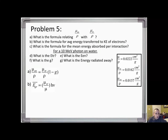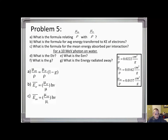The average energy transferred to kinetic energy of electrons equals mu_TR over mu times the initial photon energy. Note that mu_TR over rho values are looked up from tables in Attix or whatever textbook you're using. For part C, the mean energy absorbed per interaction equals mu_EN over mu times the initial photon energy.